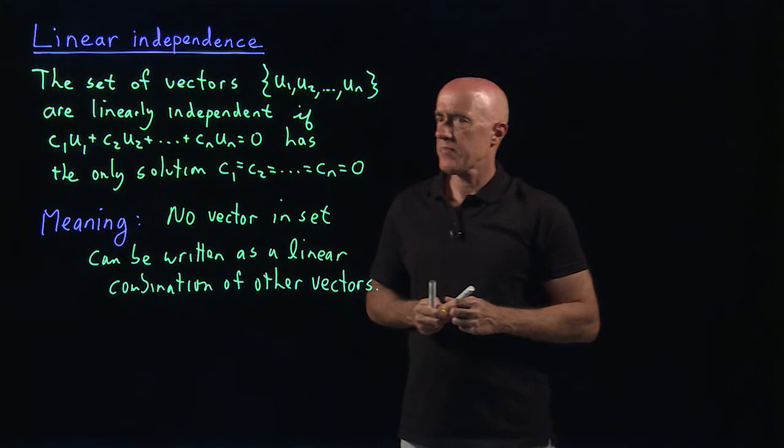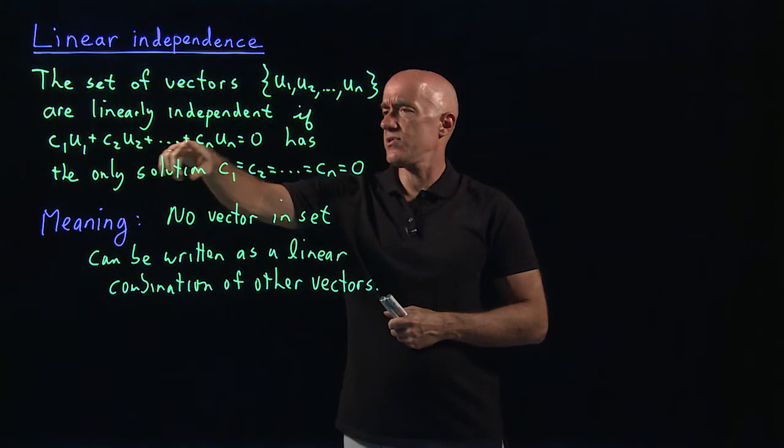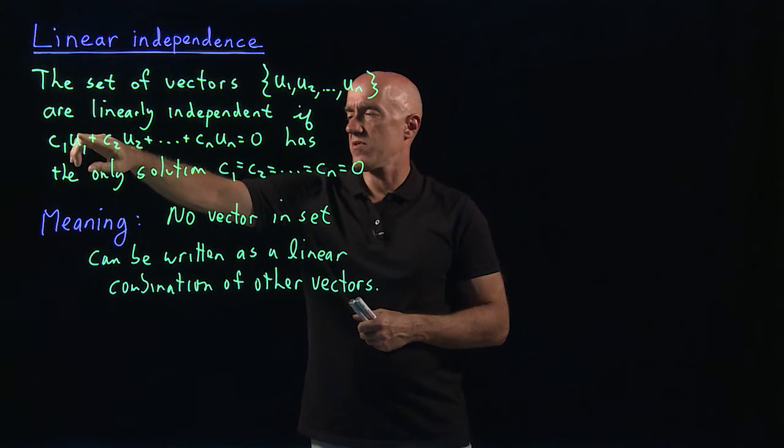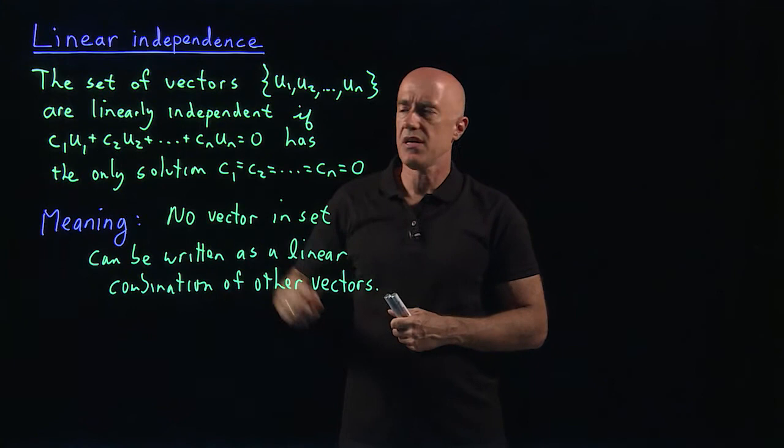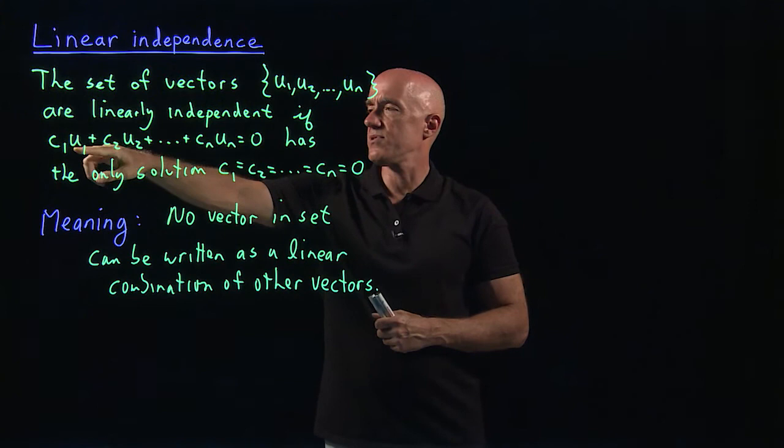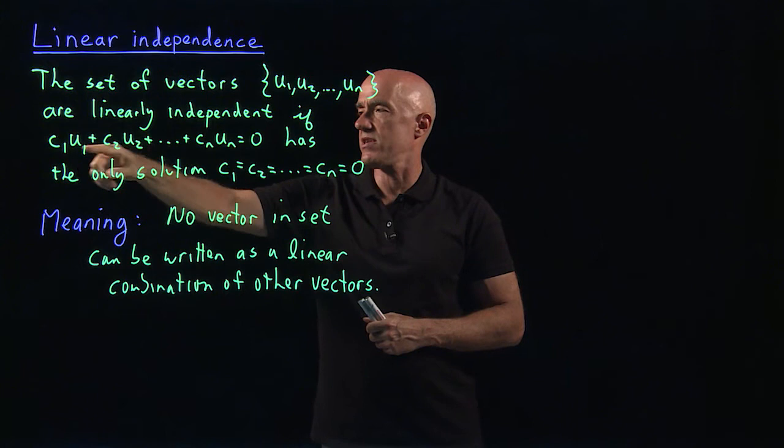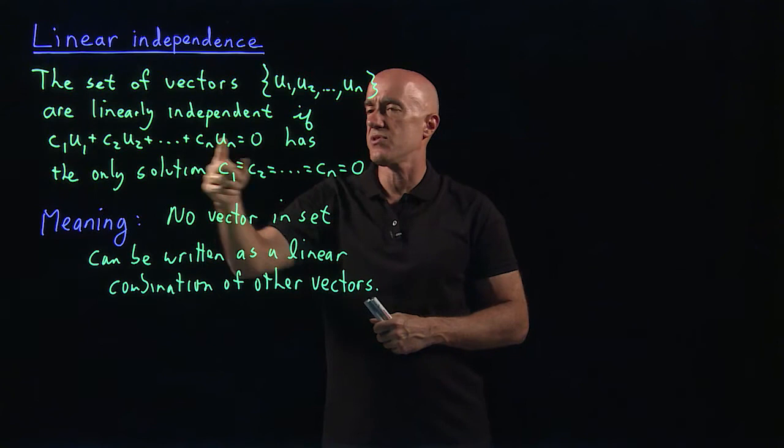Now, why does that definition mean that? Well, if there was some solution to this equation where the C's were not 0, then the C that is not 0, you can solve for that vector in terms of the other vectors where the C's are not 0. So, you'd be able to solve for, so if C1 was not 0, if there was a solution where C1 was not 0, then we can solve this equation for U1 in terms of other vectors.